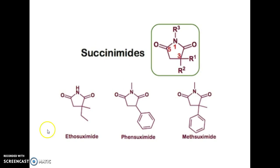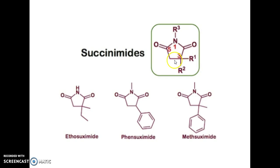We'll talk about ethosuximide, phensuximide, and methsuximide, as all three structures are succinimides. Like hydantoin, succinimides also contain a pyrrolidine ring, which is a five-membered ring structure. Here is the ring: 1, 2, 3, 4, and 5, with dione groups at positions 2 and 5.